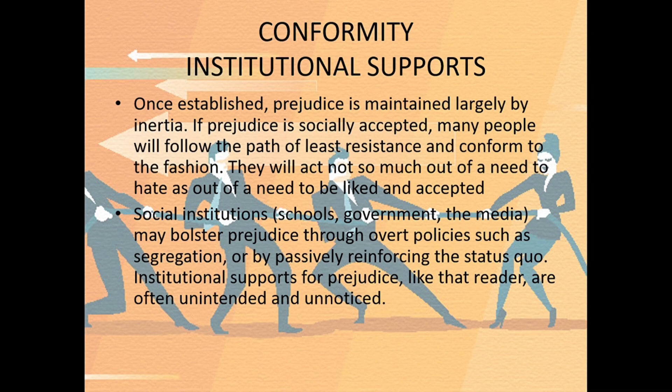How does conformity and institutional support cause prejudice? Once established, prejudice is maintained largely by inertia. If prejudice is socially accepted, many people will follow the path of least resistance and conform to the fashion. They will act not so much out of a need to hate as out of a need to be liked and accepted.